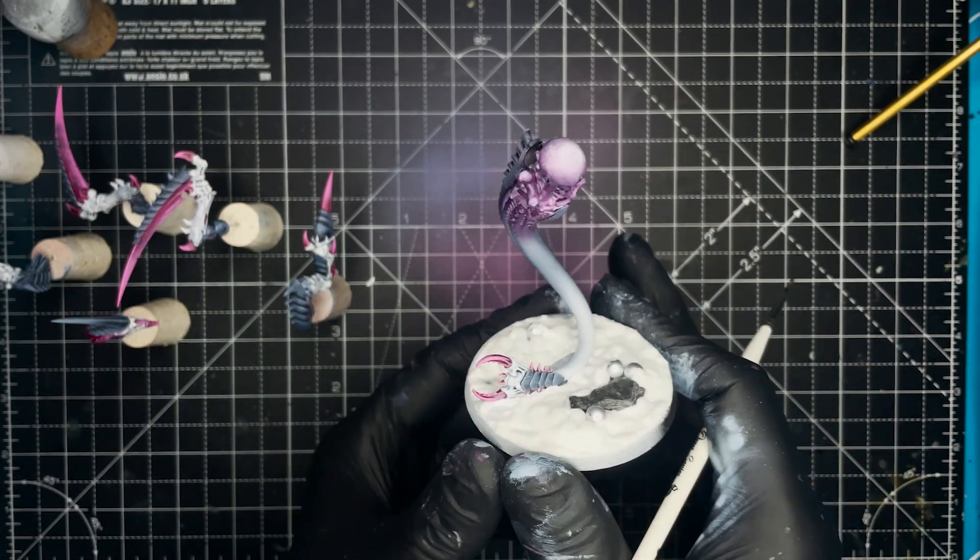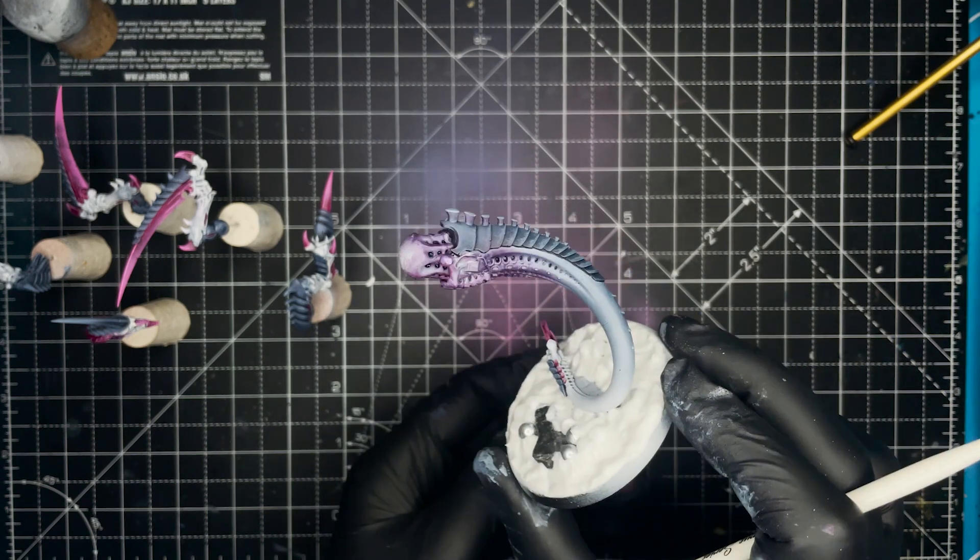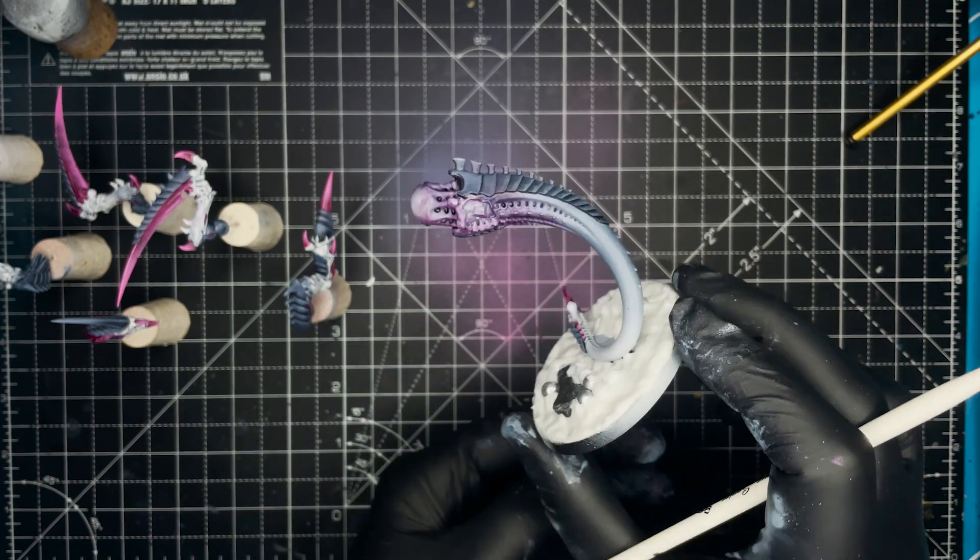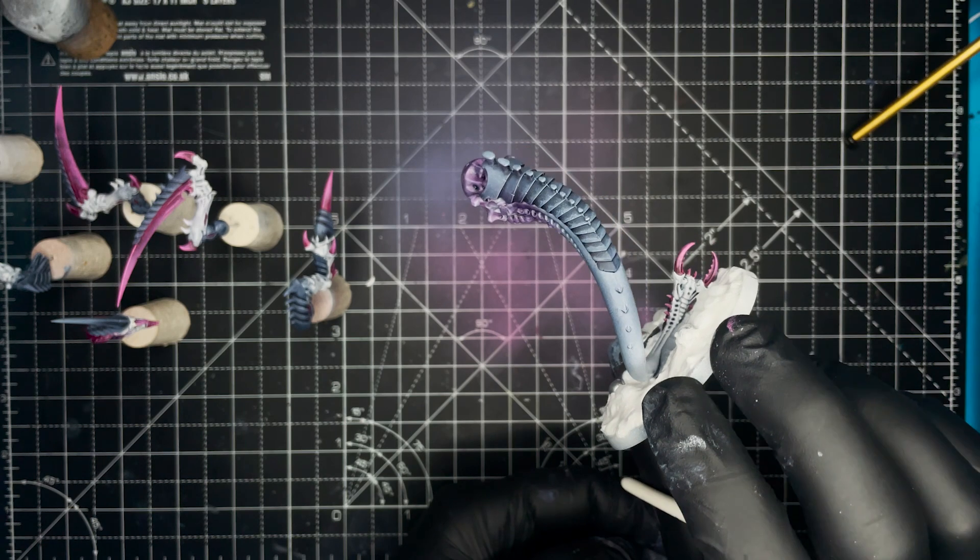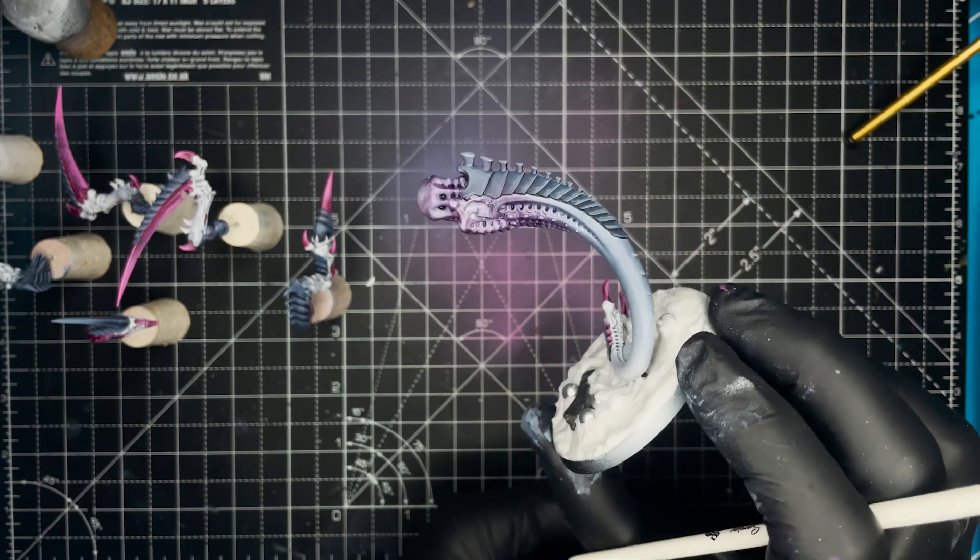And for the tail I just feathered in the same Space Wolves Grey I used on the limbs and then feathered in some of the Magos Purple in all of the boned areas.